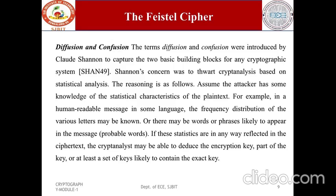The terms diffusion and confusion were introduced by Claude Shannon to capture the two basic building blocks for any cryptographic system. Shannon's concern was to thwart cryptanalysis based on statistical analysis. For example, an attacker may know the frequency distribution of letters in a human-readable plaintext message, or there may be words or phrases likely to appear in the message.